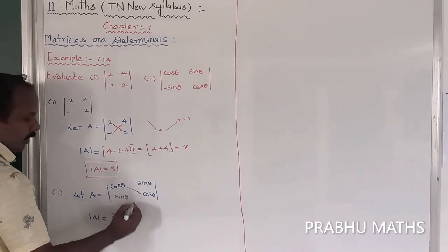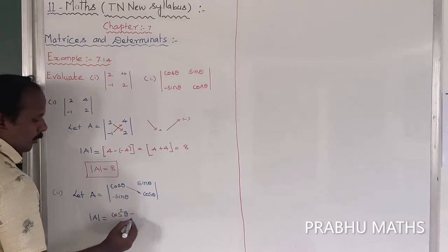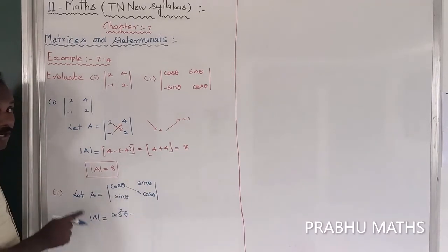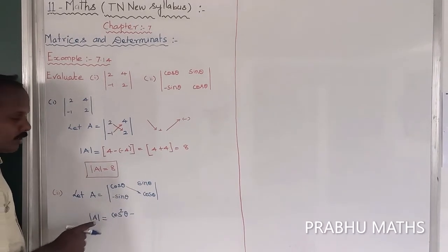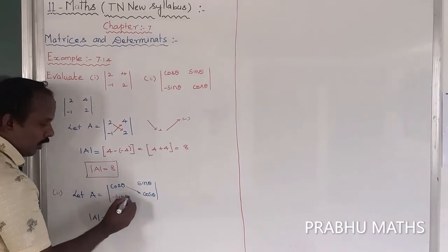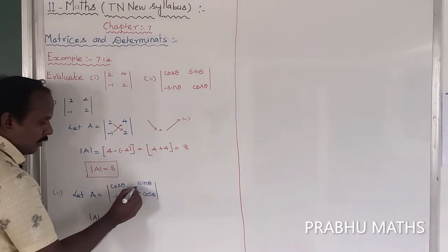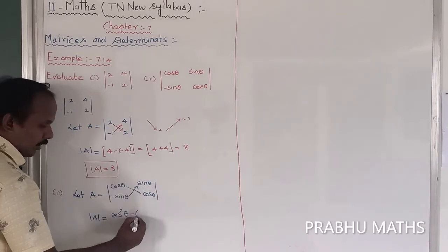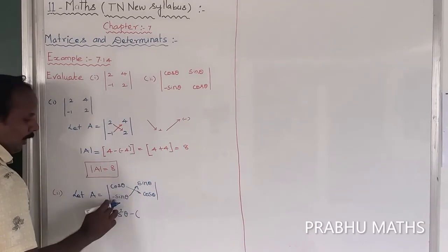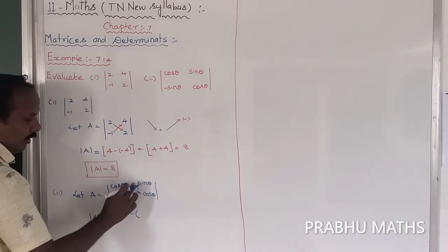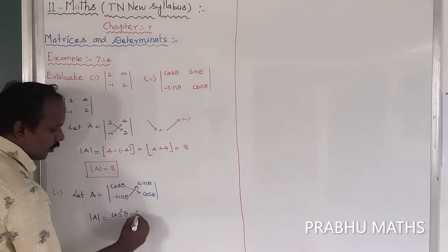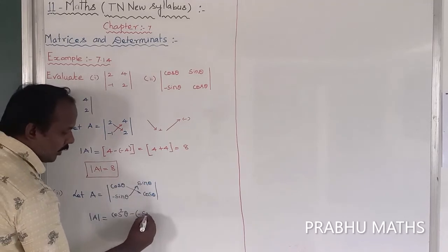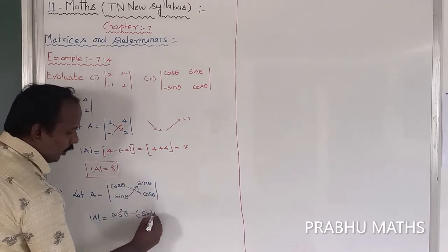Next, this term is minus, because the formula puts the upward diagonal in minus. So the upward diagonal multiplication is minus: minus sin theta times plus sin theta is equal to minus sin squared theta.